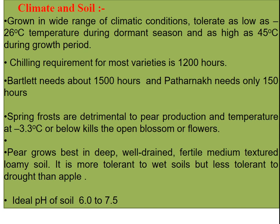Pear is grown in a wide range of climatic conditions. Plants tolerate as low as minus 26 degrees Celsius during the dormant season and as high as 42 degrees Celsius during the growth period. The chilling requirement for most varieties is 1200 hours; Bartlett needs about 1500 hours and Patnayak needs only 150 hours. Spring frosts are detrimental to pear production and temperatures at minus 3.3 degrees Celsius or below kill the open blossoms.